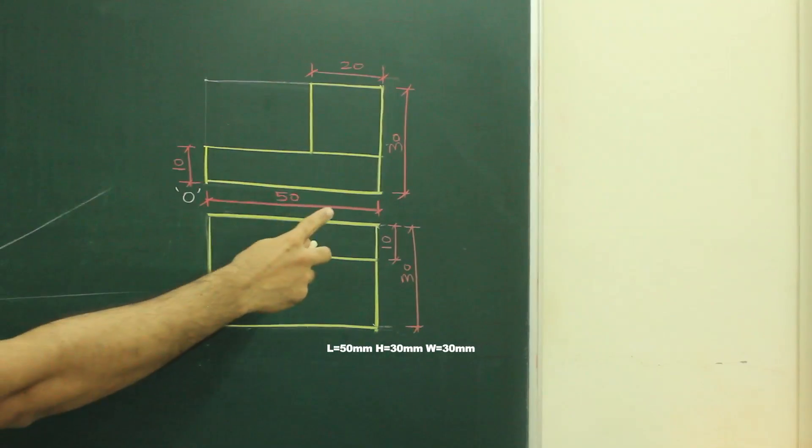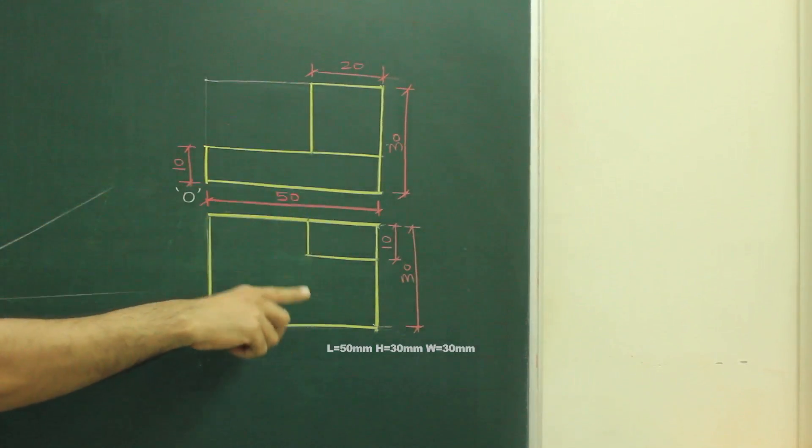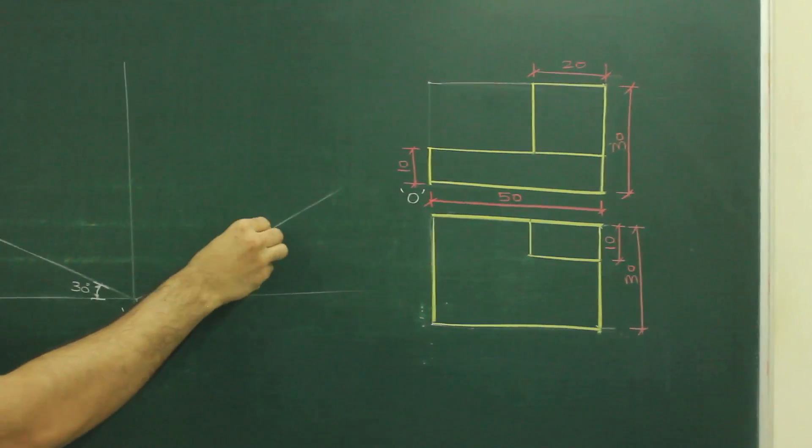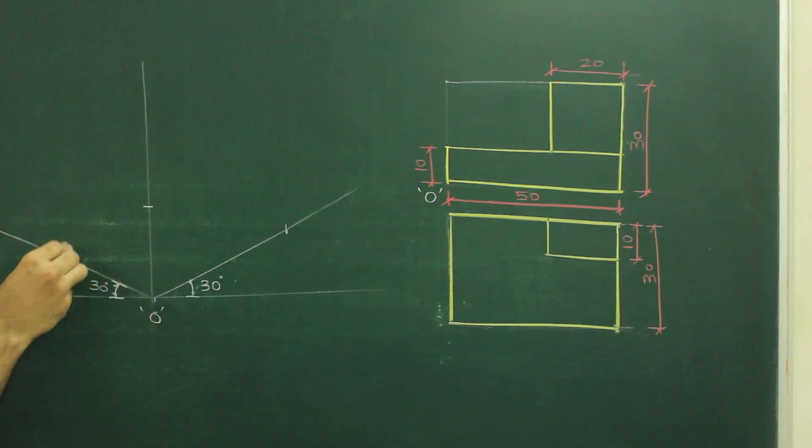In this arm, length is 50, height is 30 and width is 30. So first we will draw layout. We will mark 50 on the right hand side, 30 and 30 on this side.